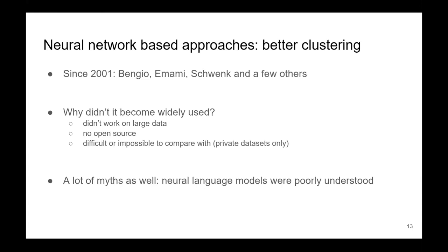It didn't really convince much of the research community. There were actually a lot of issues with these models. If you go back and read papers from before 2010, you would find that none of them actually open-sourced working code. The only person who open-sourced some code was Holger Schwenk, but I never managed to make it work. The others didn't open-source anything. The results were not using any publicly available datasets, so when I was a student myself I couldn't compare to these guys. Also all of them struggled when the amount of data grew beyond about 1 million words, because performance gains over n-grams were actually vanishing.